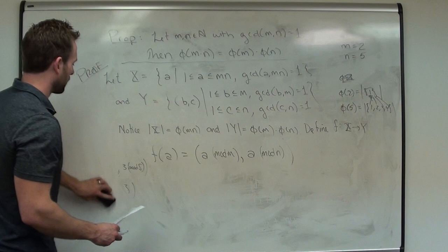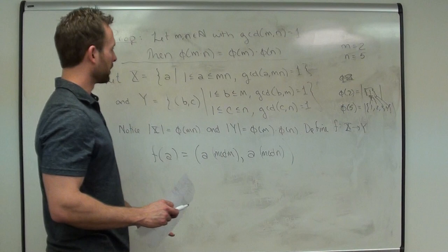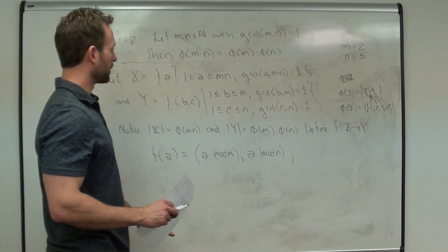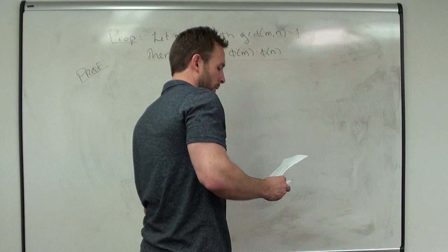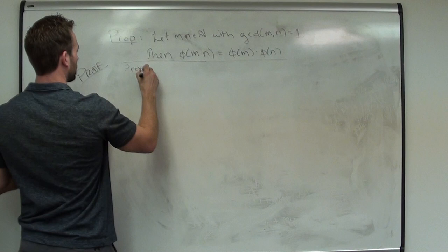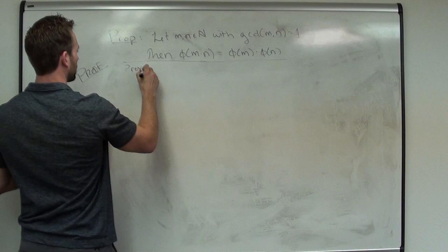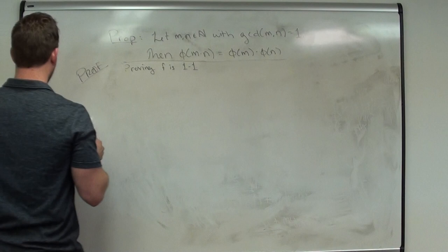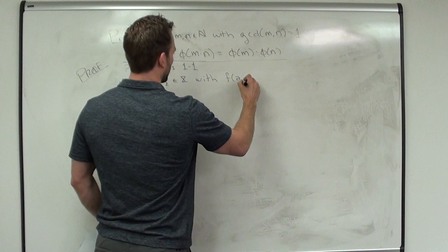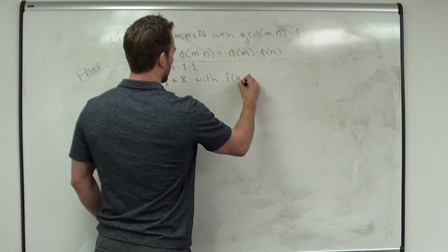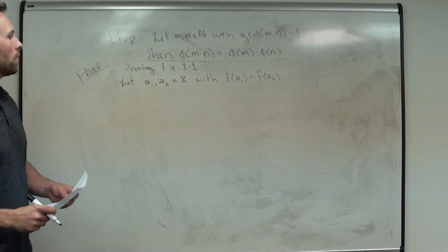Proving f is 1-to-1: let a1, a2 be elements of X with f(a1) = f(a2); we want to show a1 = a2. That's how we show 1-to-1. By definition of f, f(a1) = (a1 mod m, a1 mod n) and f(a2) = (a2 mod m, a2 mod n). Since these ordered pairs are equal, we get a1 ≡ a2 mod m, and a1 ≡ a2 mod n.